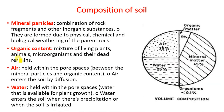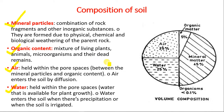What is the organic composition of soil? Soil is composed of mineral particles, organic content, air and water. Mineral particles are a combination of rock fragments and other inorganic substances, formed due to physical, chemical and biological weathering of rocks. Since rocks are aggregates of minerals, breaking down rocks into smaller particles forms the mineral particles in soil. Organic content is a mixture of living plants, animals, microorganisms and their dead remains.